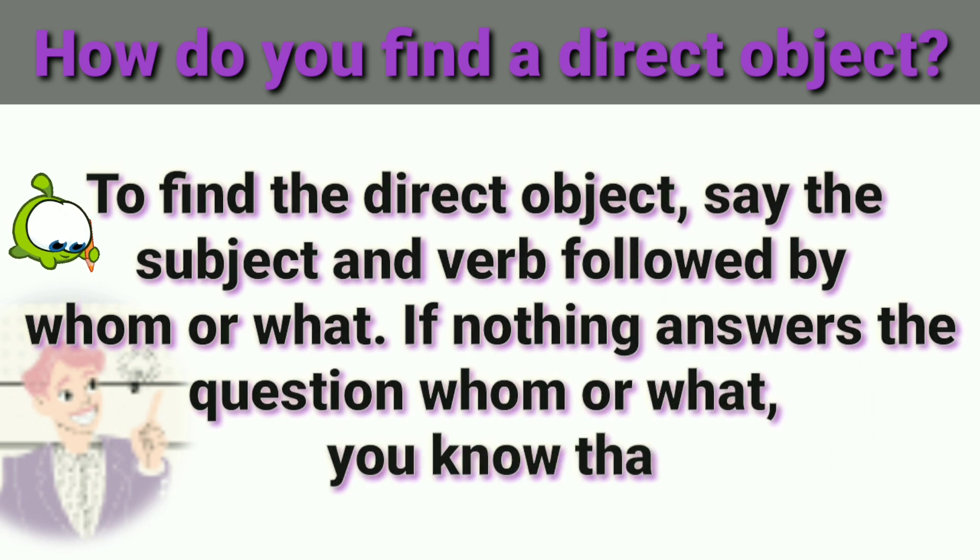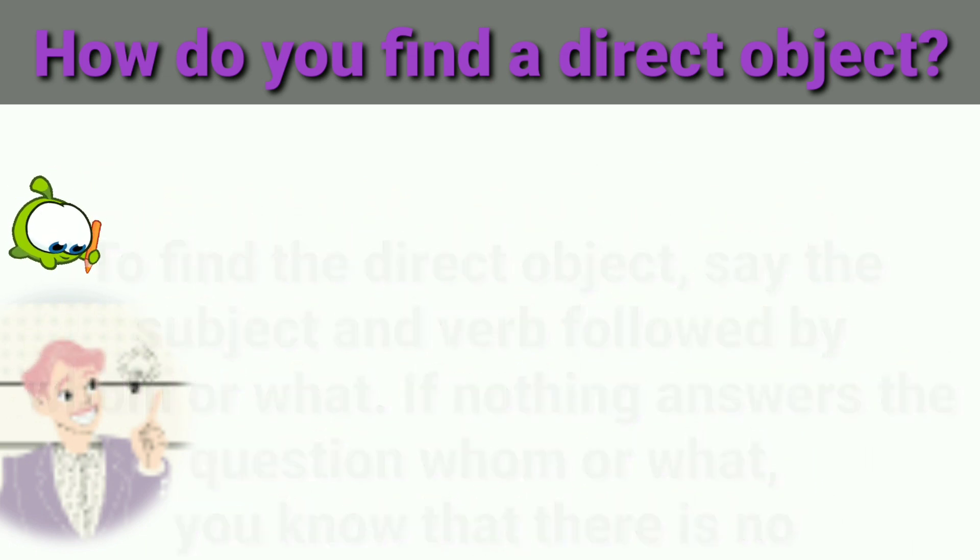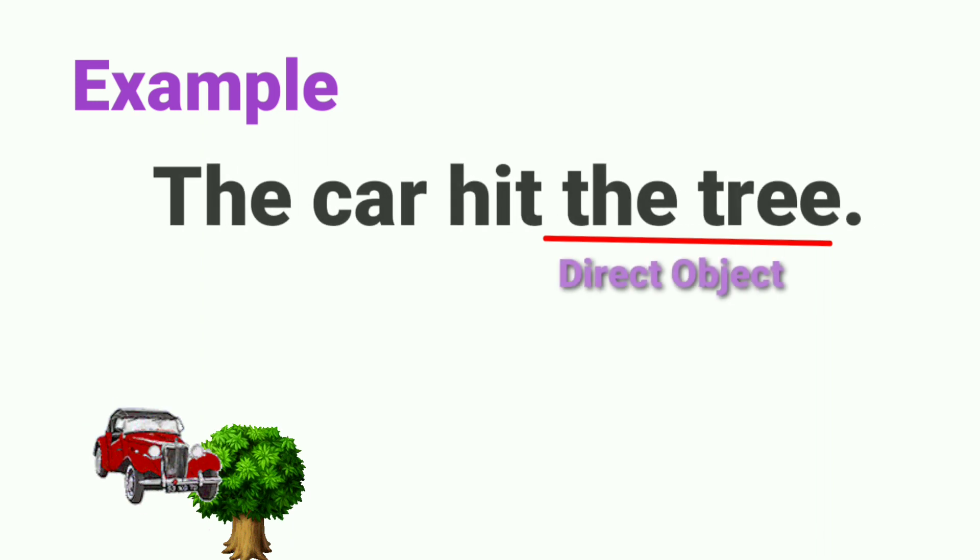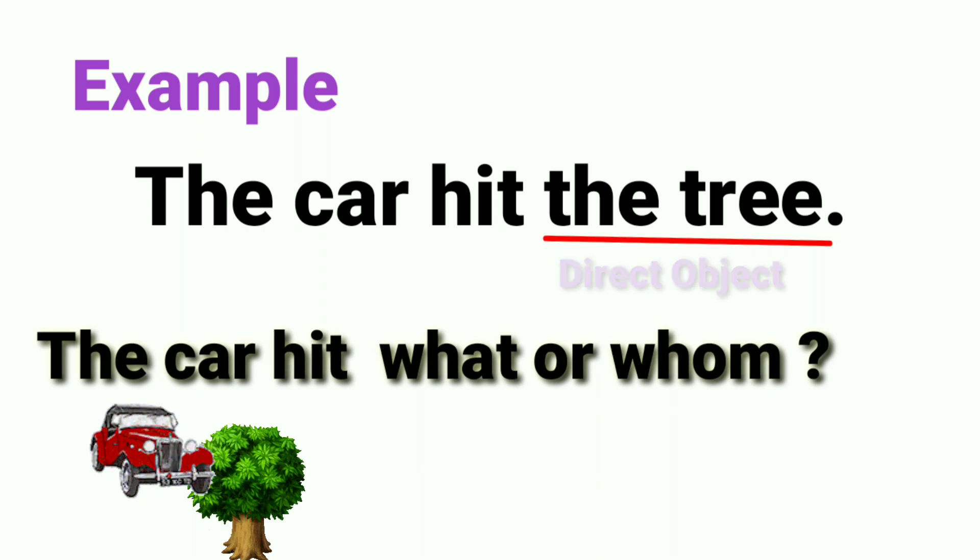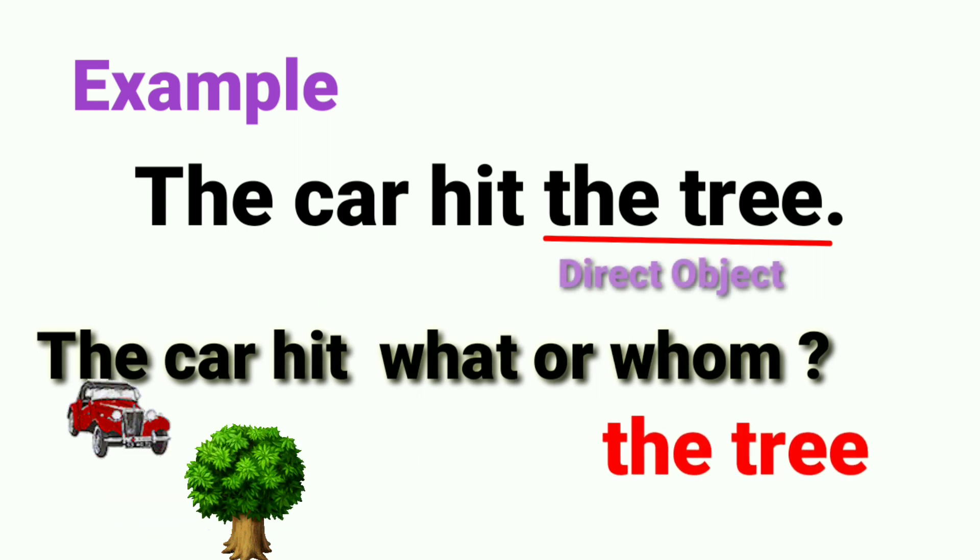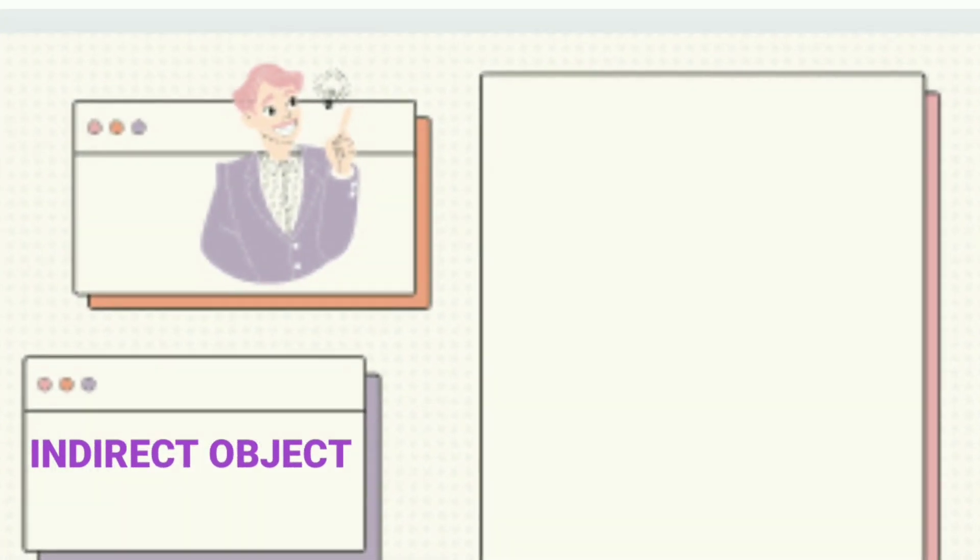Check this example: The car hit the tree. The car hit what or whom? The answer is the tree. The tree is the direct object.